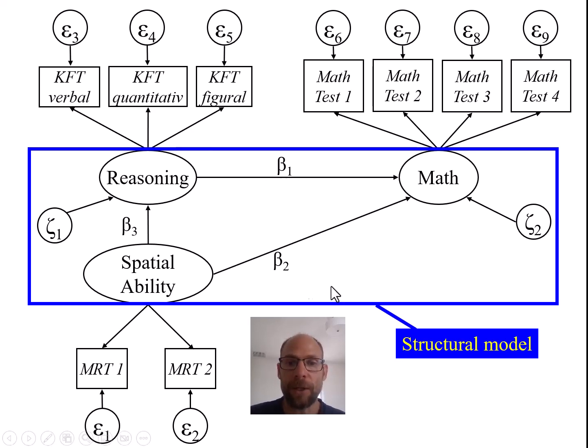So that when you test, for example, a structural model like this, that your significance tests for these path coefficients will be accurate, will be reliable, and you won't run into type 1 error inflation, for example, or other issues with your significance tests.